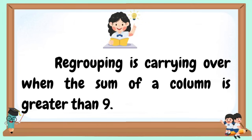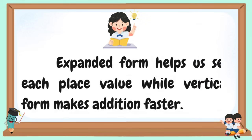Regrouping is carrying over when the sum is greater than 9. Expanded form helps see each place value, while vertical form makes addition faster.